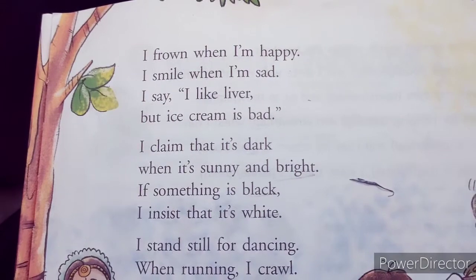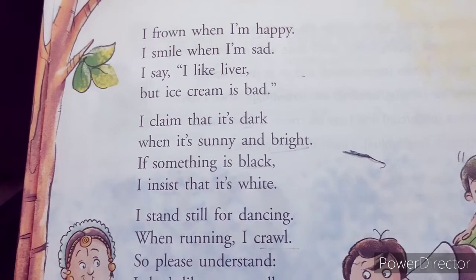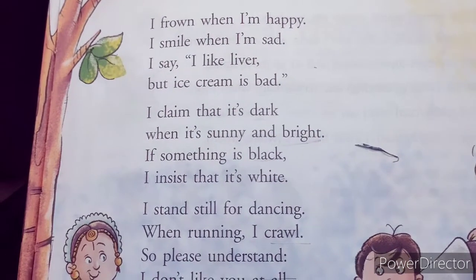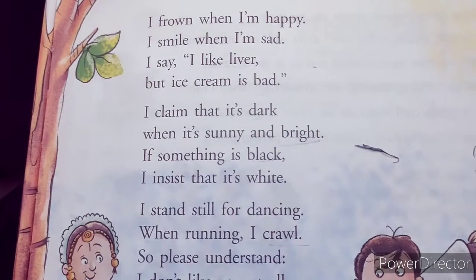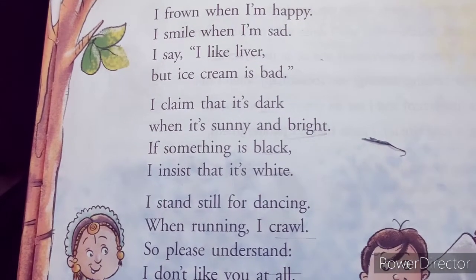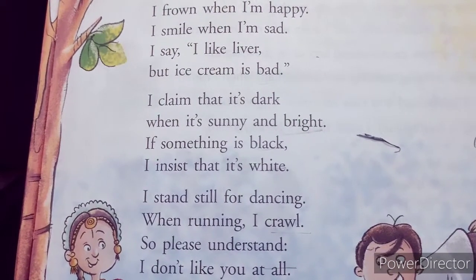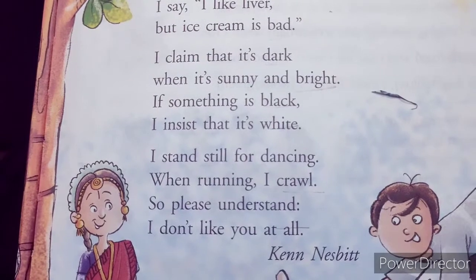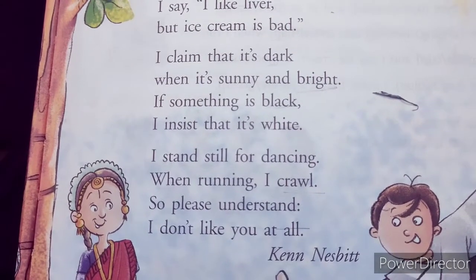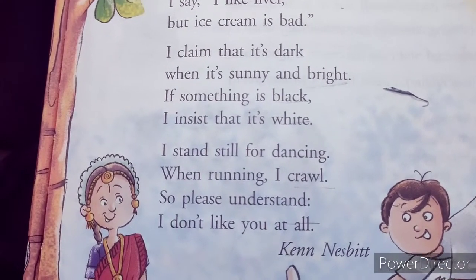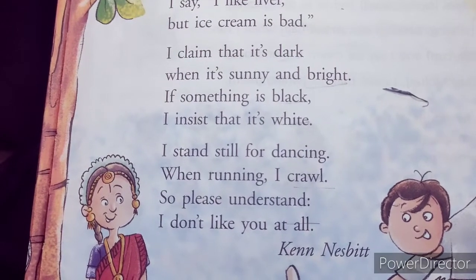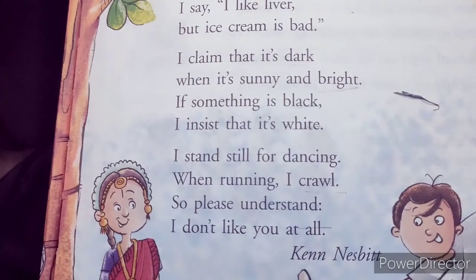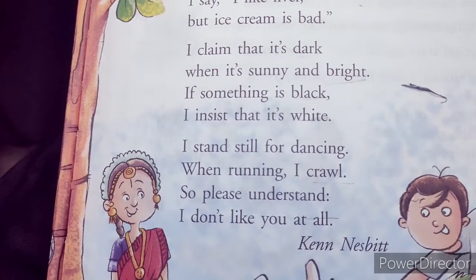I claim that it's dark when it is sunny and bright — jab bahar din hai aur surya bahar hai, lekin main bolunga abhi raat hai. If something is black, I insist that it's white — jab main koi black color dekhuga toh bolunga ye toh white hai. I stand still for dancing, when running I crawl — jab dancing karni hai toh main chupchap khada ho jaunga. Crawl means ghutno ke bal chalna. So please understand, I don't like you all at all — poet is saying please samjho, main kisi ko bhi pasand nahi karta.